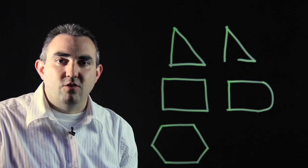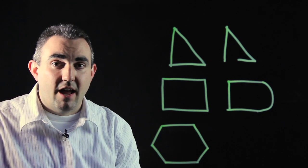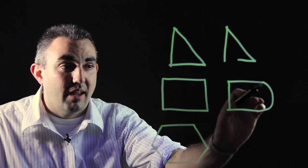So the two main generalizations you can make about a polygon are number one, they cannot have openings, and number two, they cannot have any curves.